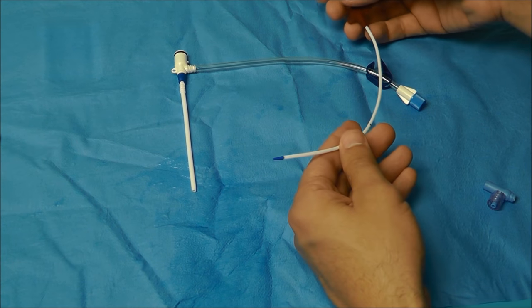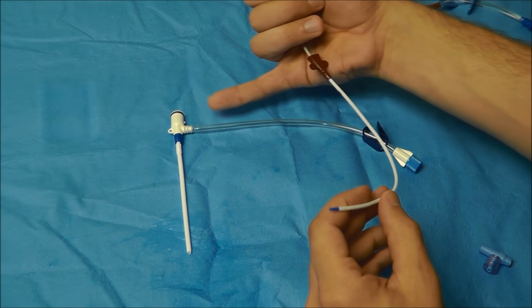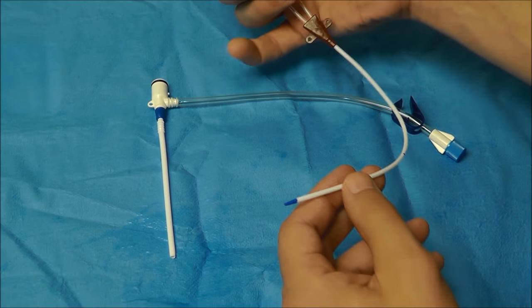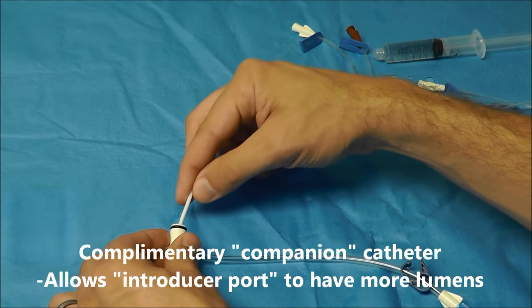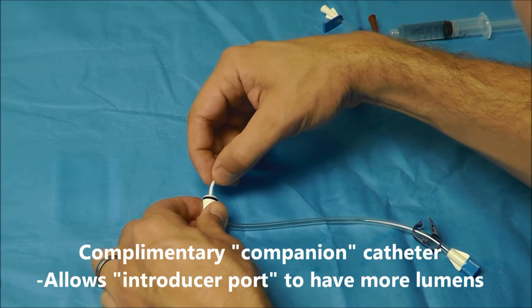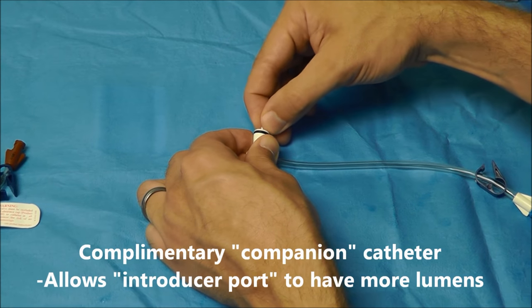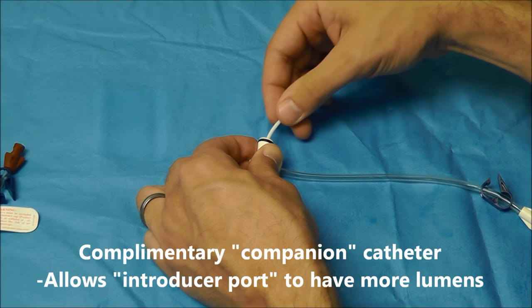The other option that you have to give you more ports when you're using a central catheter with an introducer port is to use what's called a companion catheter, and it's just like a regular central line catheter except you advance it down here and you're just going to be able to have extra ports.